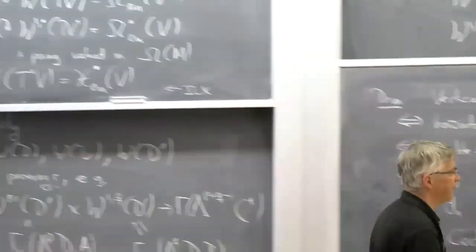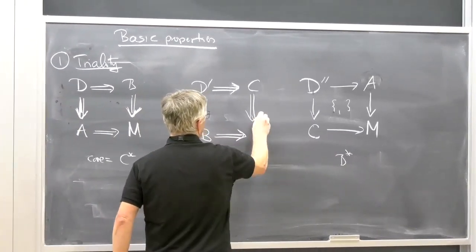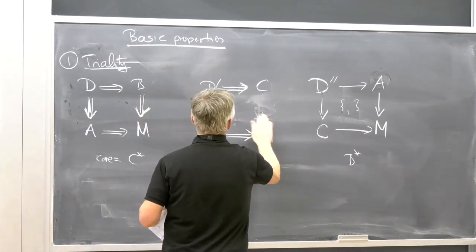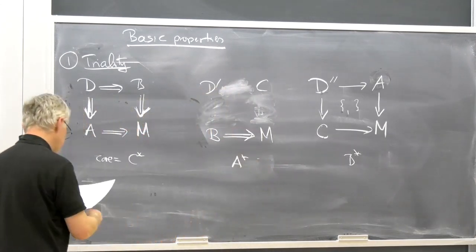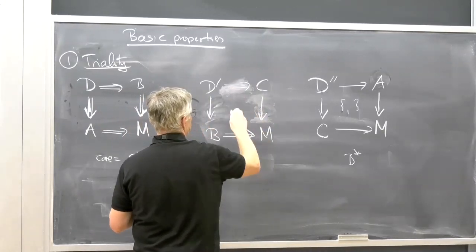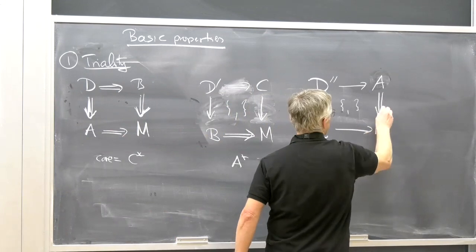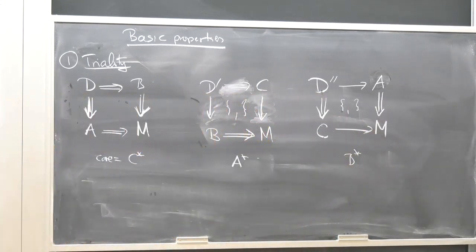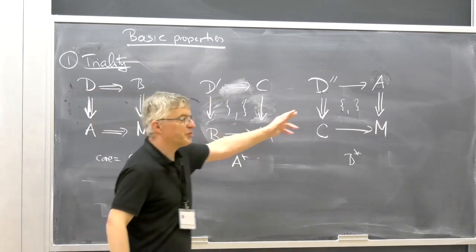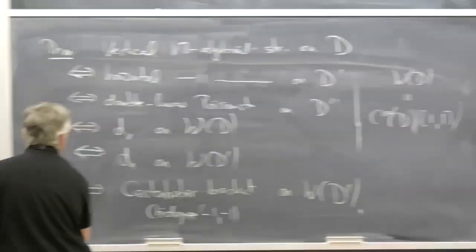If you have a double Lie algebroid, then you have a Lie algebroid structure vertically but also a linear Poisson structure, and on the other structures you have a Lie algebroid and a Poisson structure simultaneously, and on the third one also. The definition of a double Lie algebroid, a notion introduced by Mackenzie and Xu, requires compatible Lie algebroid structures.